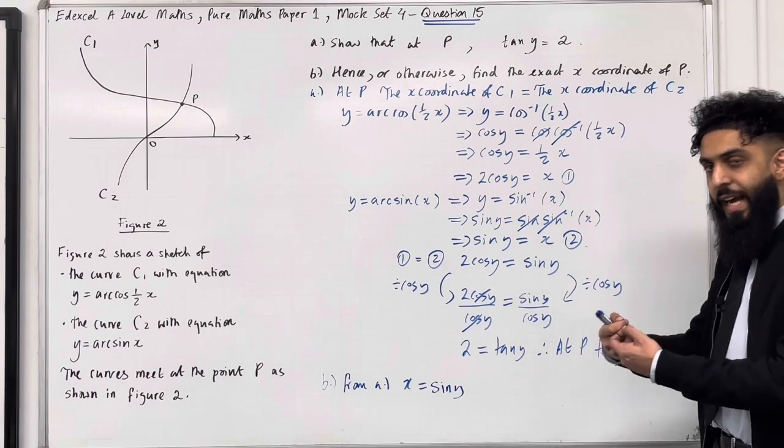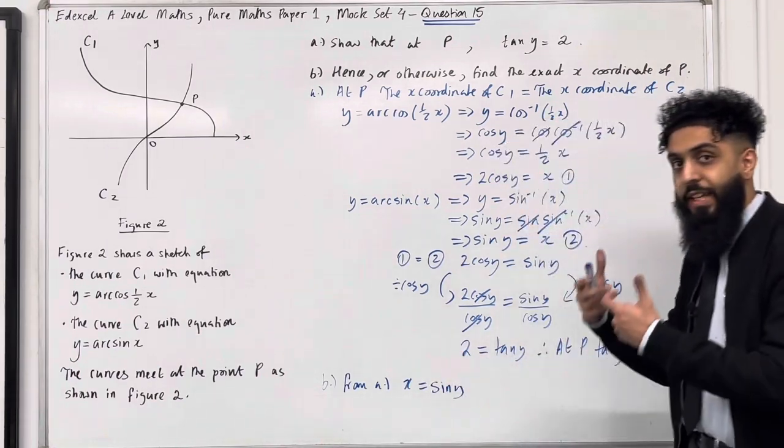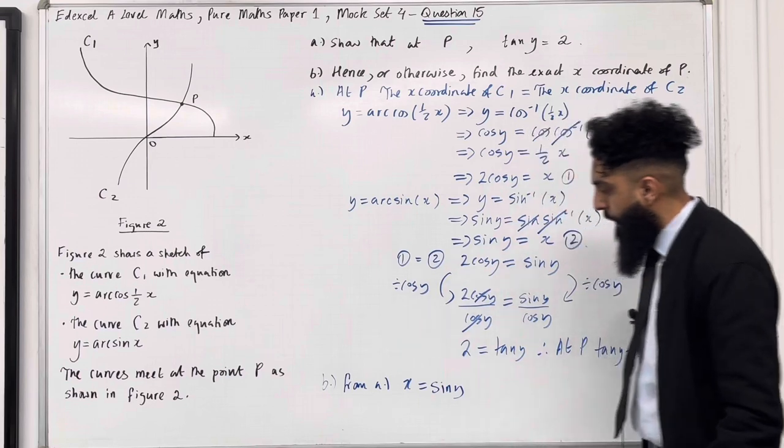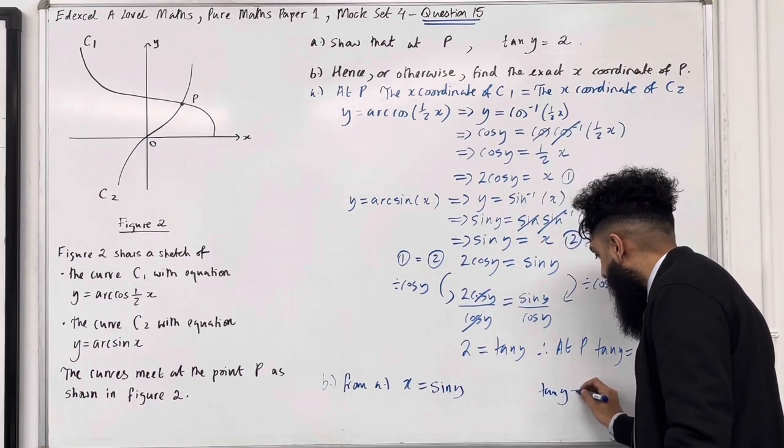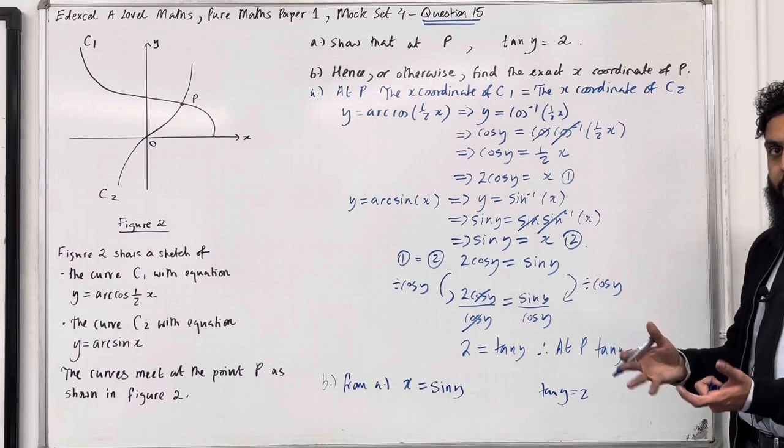Now to work out the exact coordinate of x, I need to work out the exact value of sin y. So what I can do is use the fact that tan y = 2 to construct a right-angled triangle.